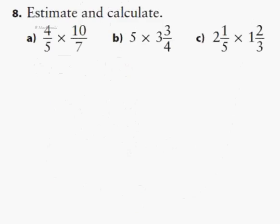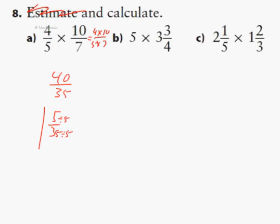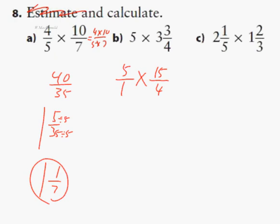Question 18 — just calculate, no need to estimate. Using the algorithm: 4 times 10 over 5 times 7 gives 40 over 35, which is 1 and 5 thirty-fifths. In lowest terms — dividing by 5 — that's 1 and 1 seventh. For part B, multiplying a mixed fraction by a whole number: think of 5 as 5 over 1, and convert 3 and 3 quarters to 15 quarters. So 15 times 5 is 75, over 1 times 4. 75 divided by 4 — there are 18 fours with 3 remainder, giving 18 and 3 quarters.